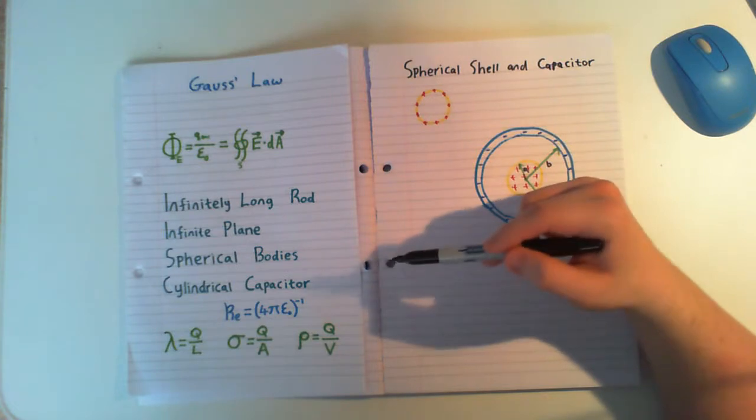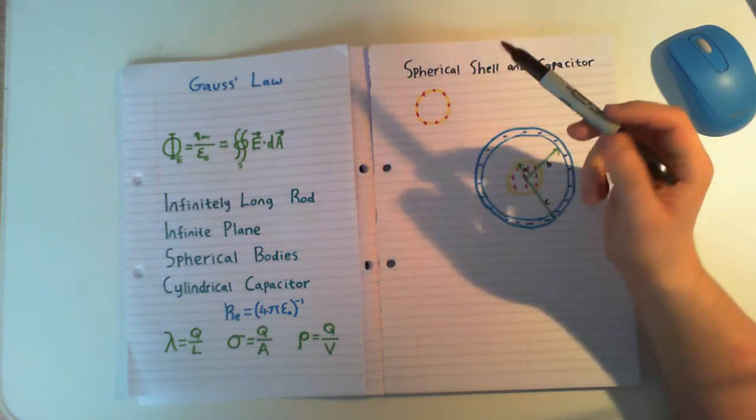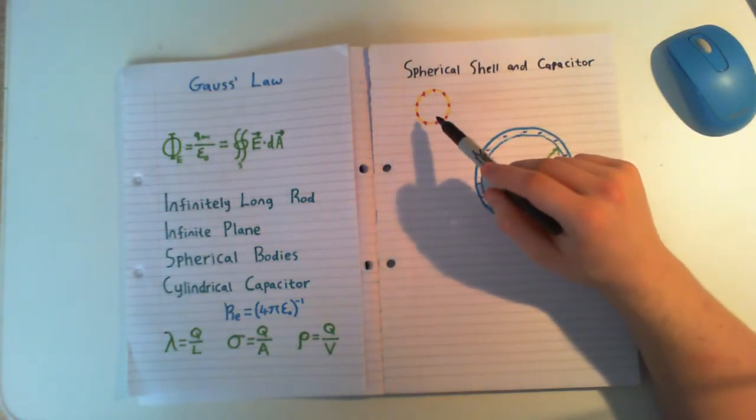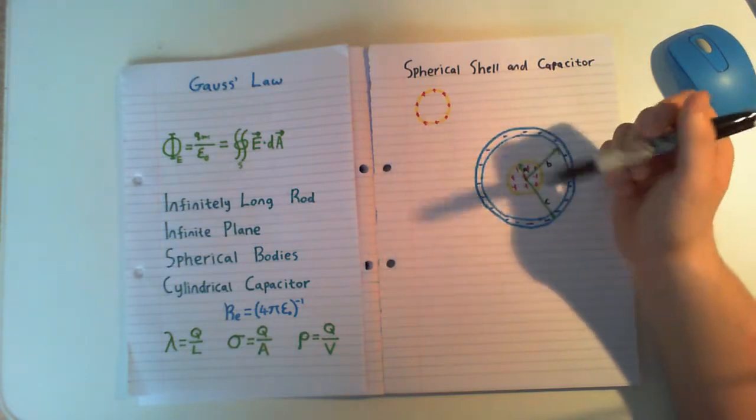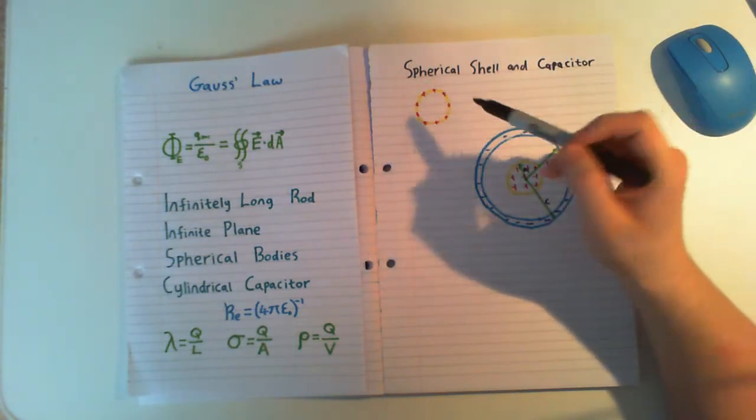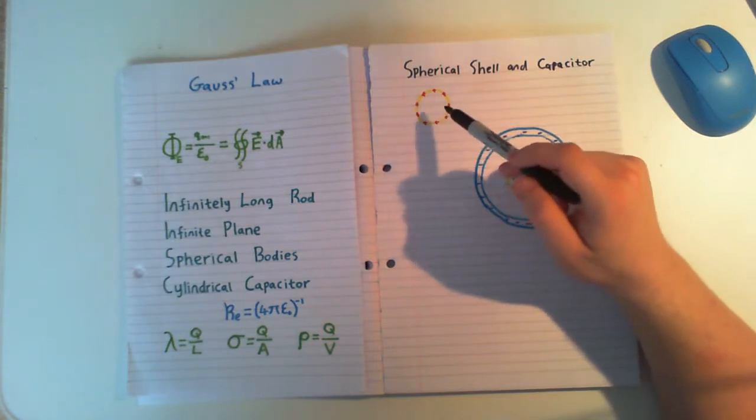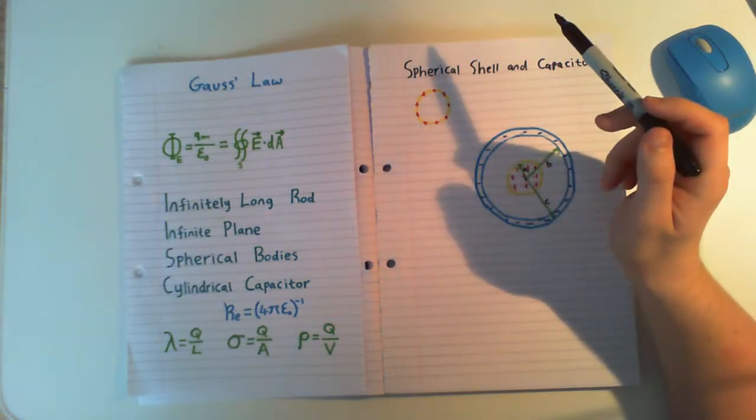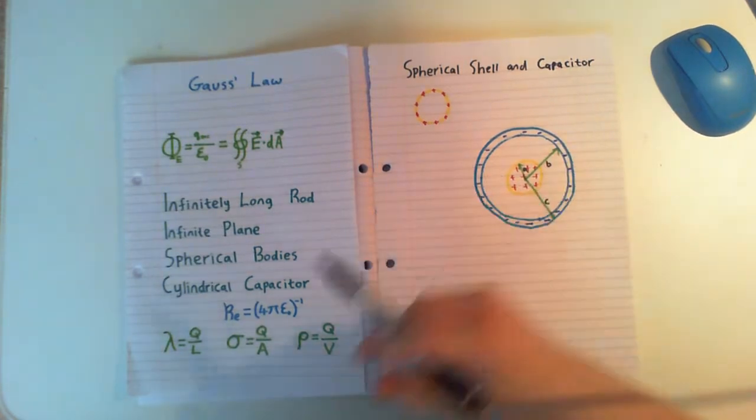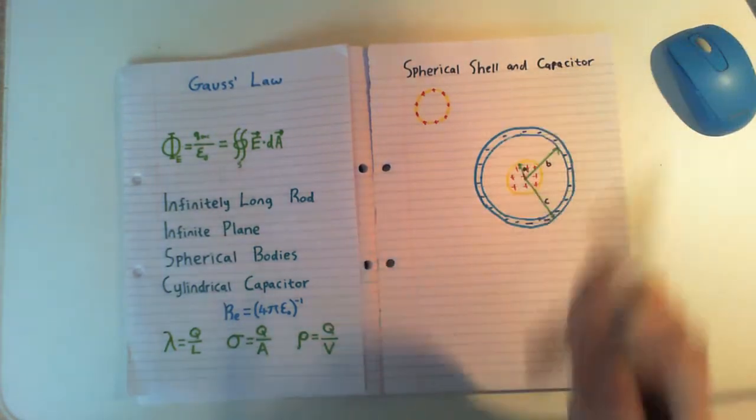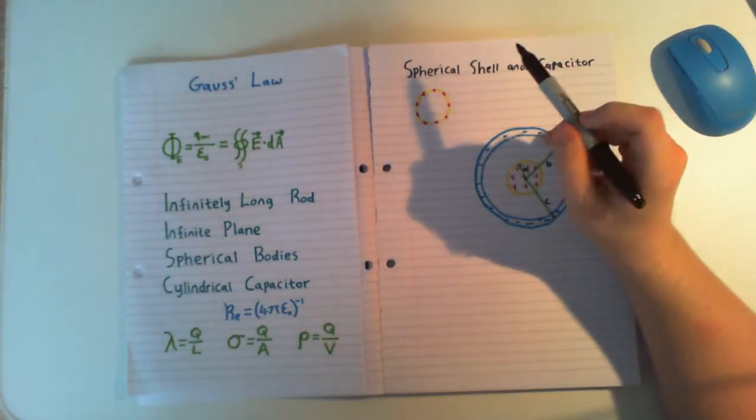So we're going to start with a spherical shell. Now I'm not going to be doing all the math for the spherical shell. We're just going to be going over one or two little bits of concept for this. So in the last video, if you want to go back and have a look at that one, you'll be able to see that we did the point charge and the conducting and non-conducting solid spheres.